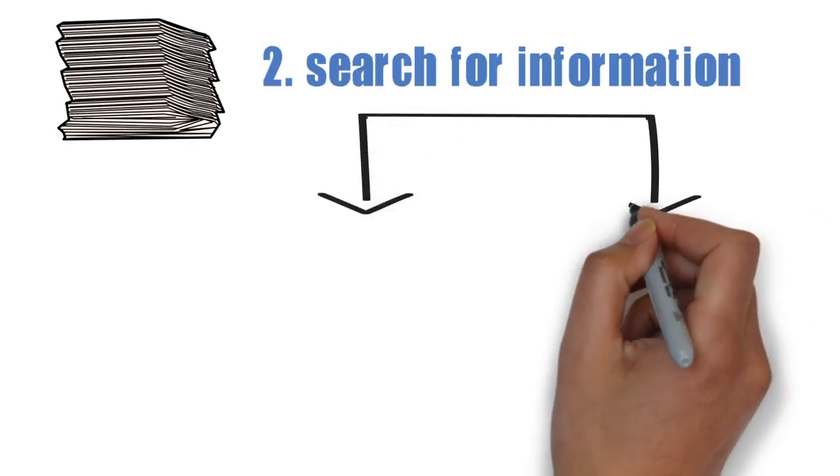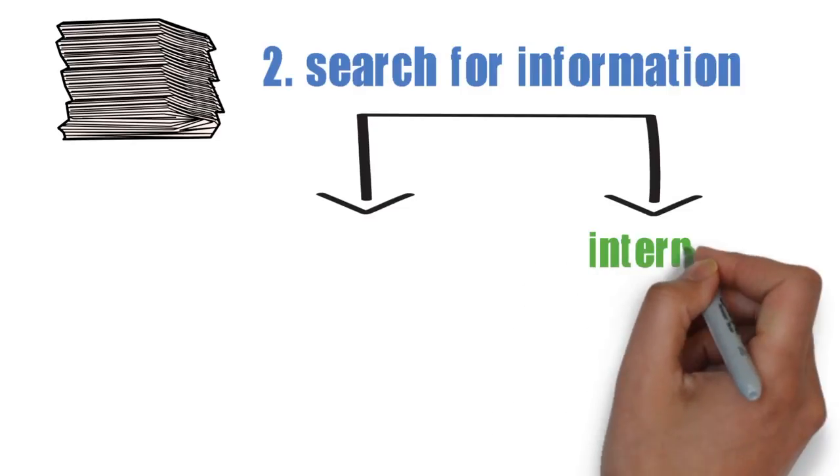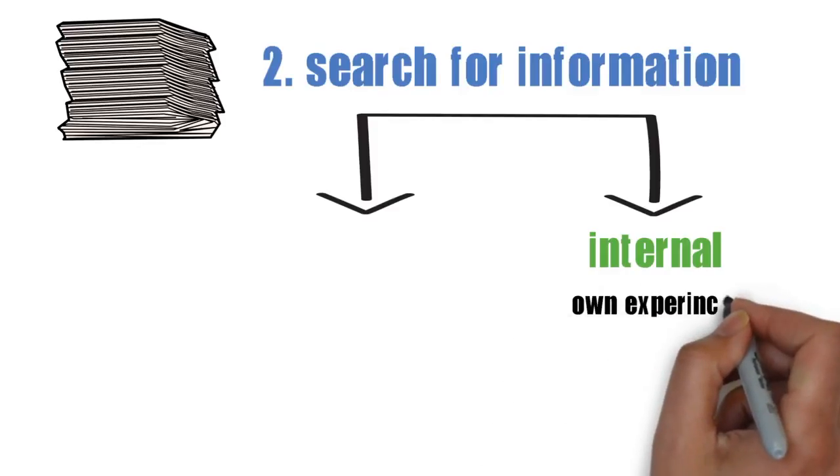Information search can be divided in two types: the internal search and the external search. In internal search consumers compare alternatives based on their own experiences, memories, and knowledge.